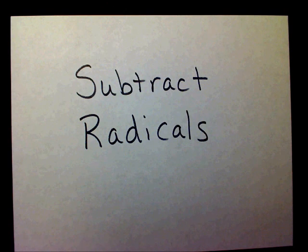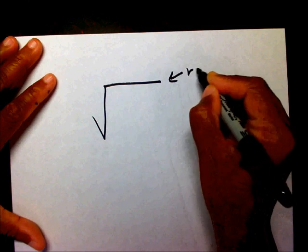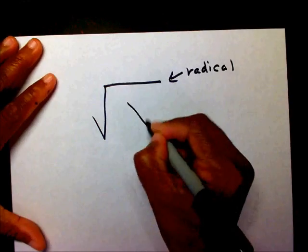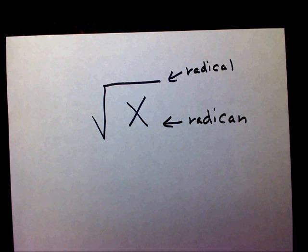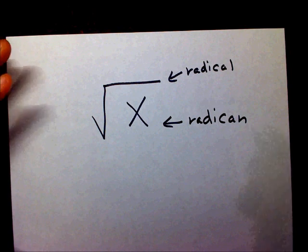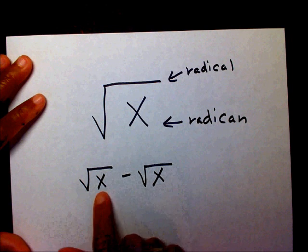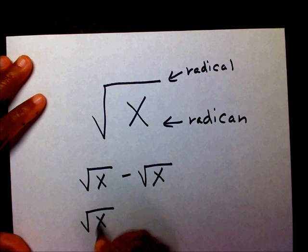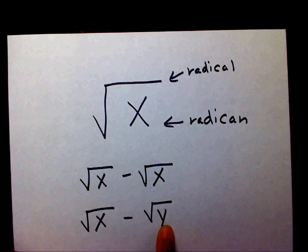As a review from our adding radicals video: you have a radical symbol, and inside the radical you have something called a radicand. Just like with addition, your radicands have to be the same when you subtract. For instance, radical X minus radical X can be subtracted because they share the same radicand, but radical X minus radical Y cannot, because the radicands are different.